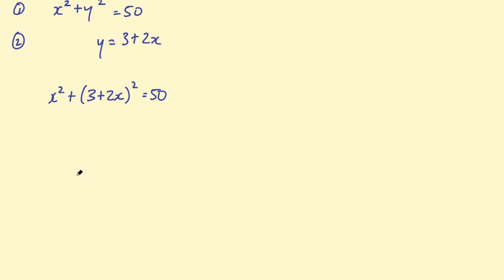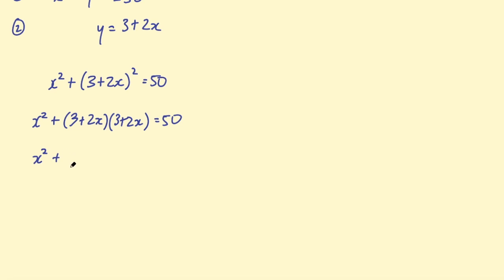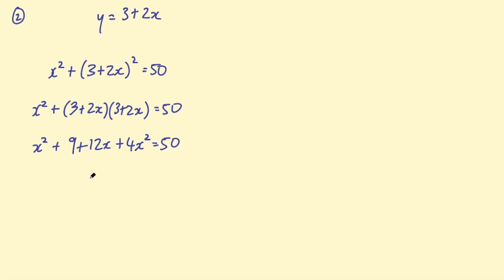Expanding the brackets: x squared plus (3 plus 2x)(3 plus 2x) equals 50. That gives x squared plus 9 plus 6x plus 4x squared equals 50. Simplifying: x squared plus 4x squared is 5x squared, plus 12x, then 9 minus 50 is minus 41, giving 5x squared plus 12x minus 41 equals 0.